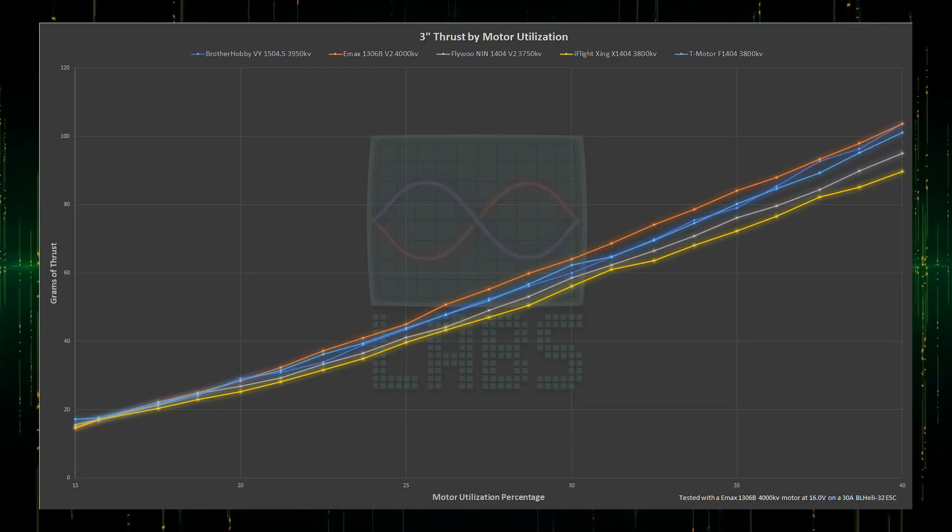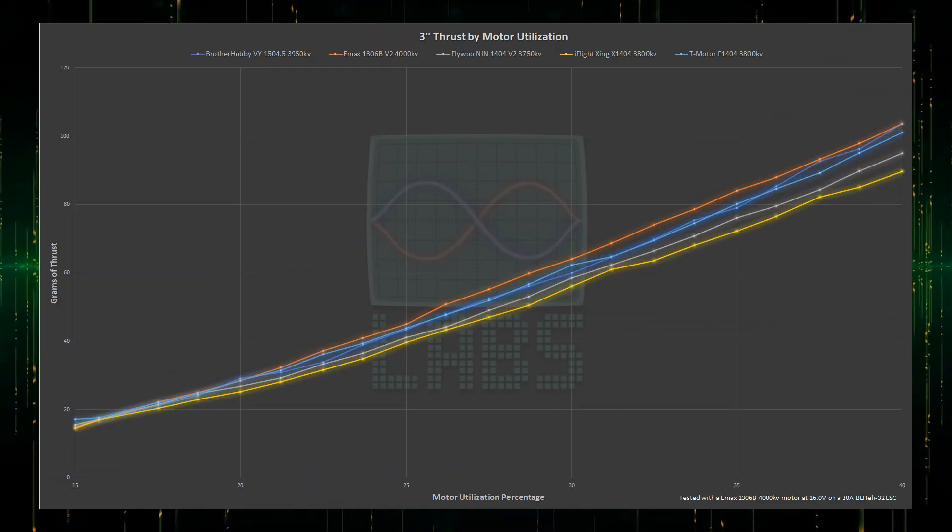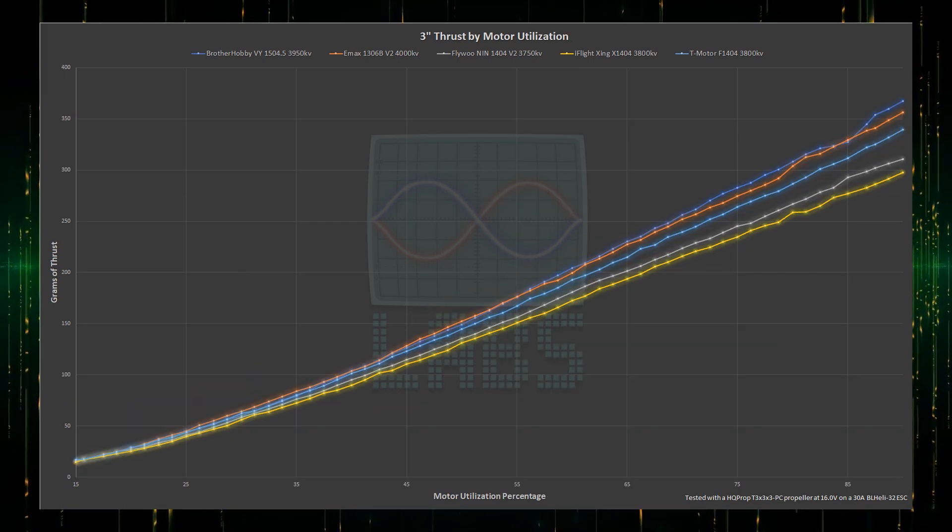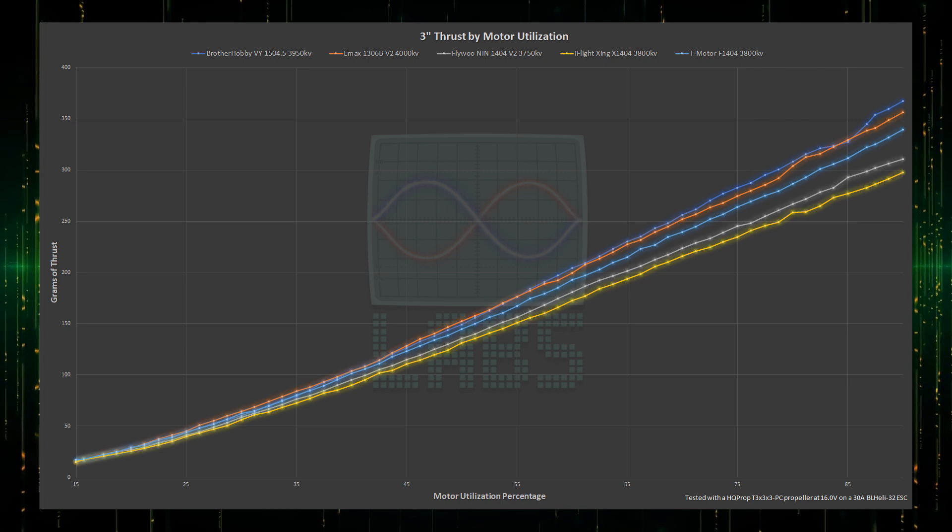Enhance! Looking closer at the first 40 grams of thrust, you can see the T-Motor and the Brother Hobby dancing with one another, basically tied. After that, the Brother Hobby maintains a clear lead across the remainder of the throttle range.